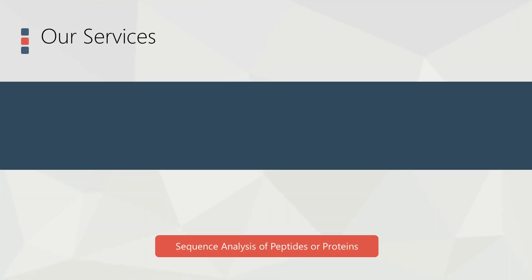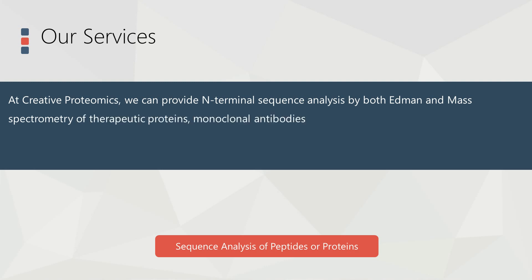At Creative Proteomics, we can provide N-terminal sequence analysis by both Edman and mass spectrometry of therapeutic proteins, monoclonal antibodies and protein vaccines. In our view, Edman sequencing and mass spectrometric analysis can provide complementary information.